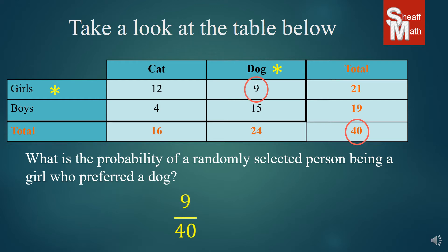And this is our probability: the chances of you asking a kid what they prefer, a cat or dog, there's a 9 out of 40 chance that it's going to be a girl who prefers a dog. And that's our final answer.